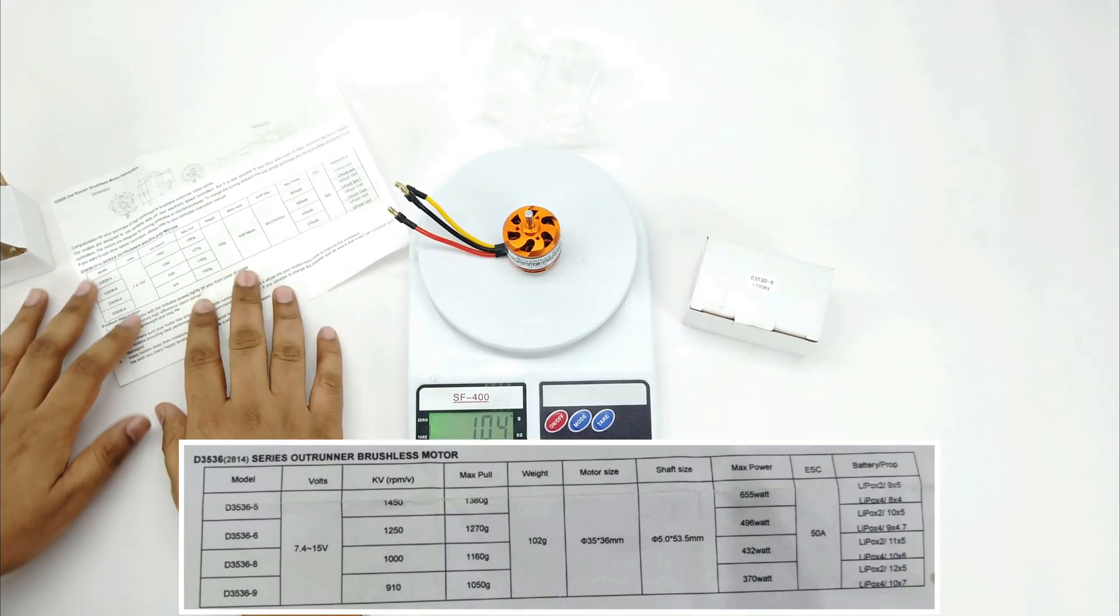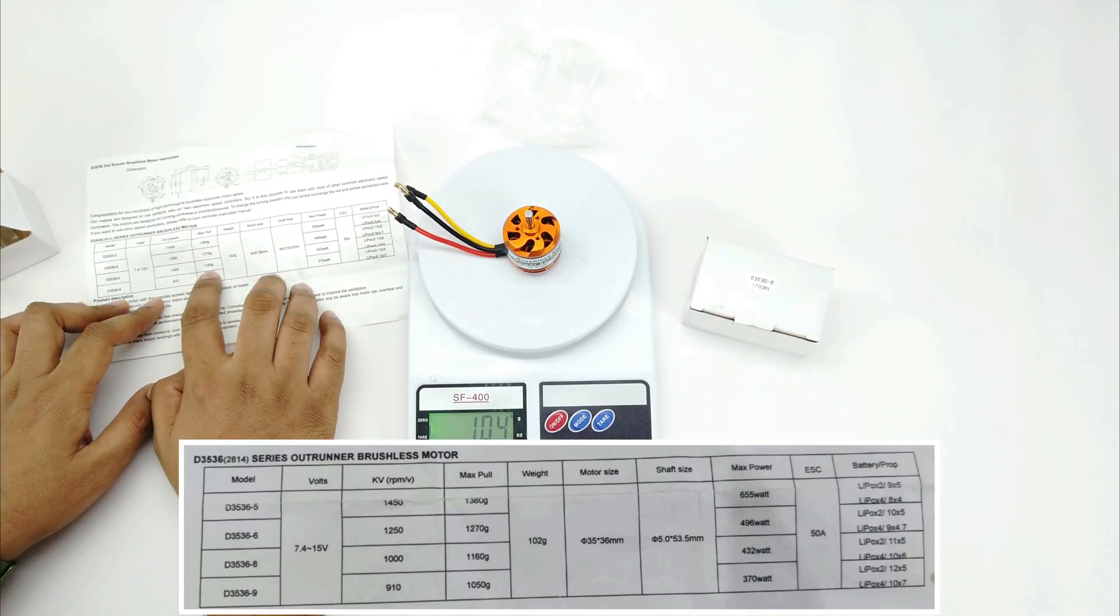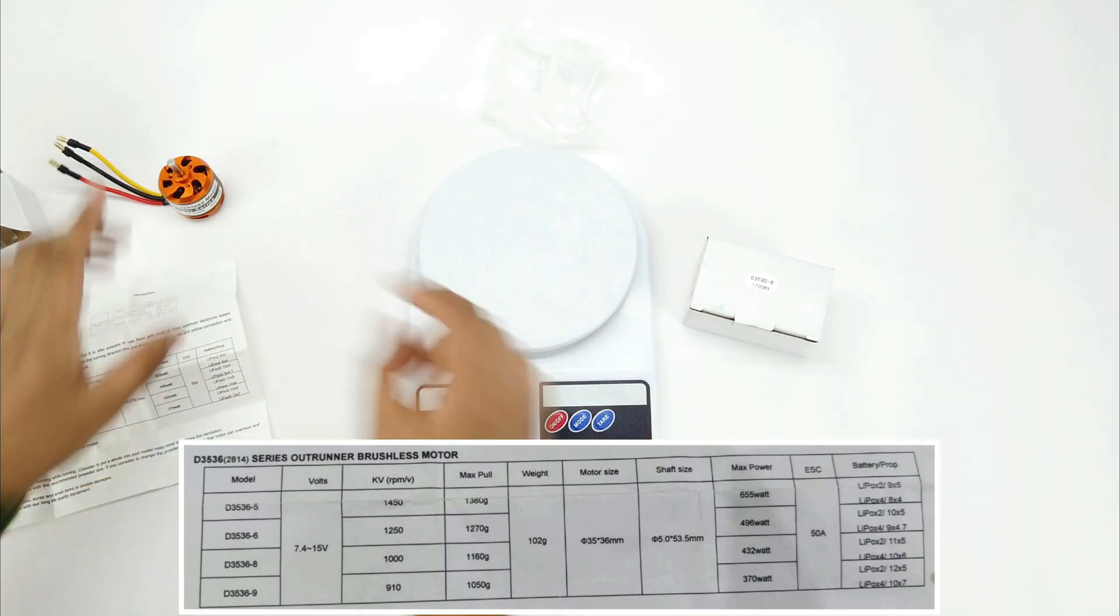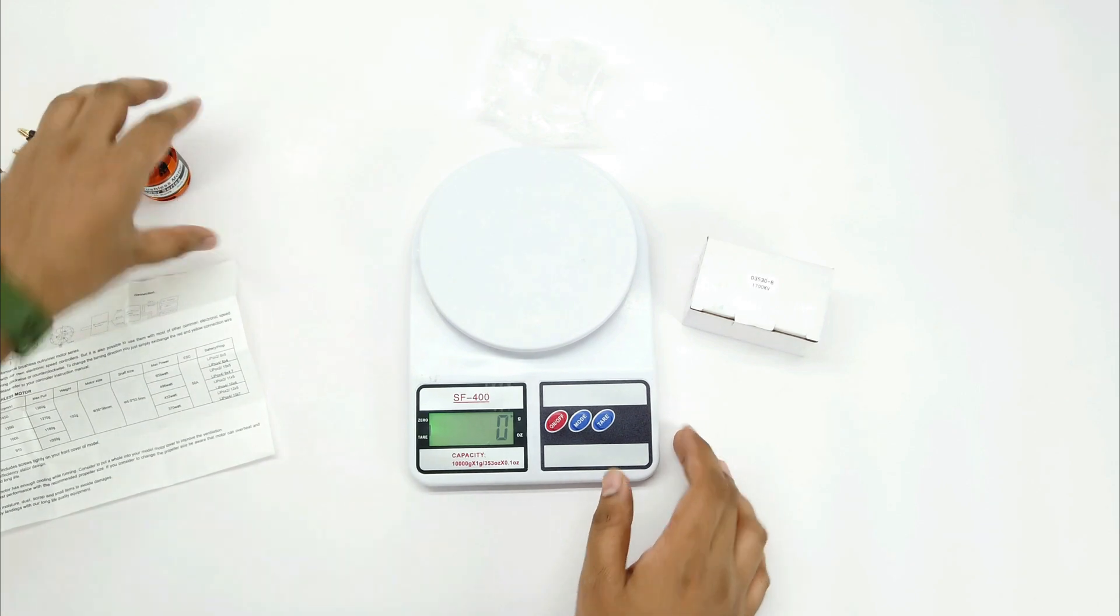And yes, it's absolutely correct. So this 1000kV motor gives us a thrust of 1160 grams but its price is approximately 1550 INR, that's approximately $19.